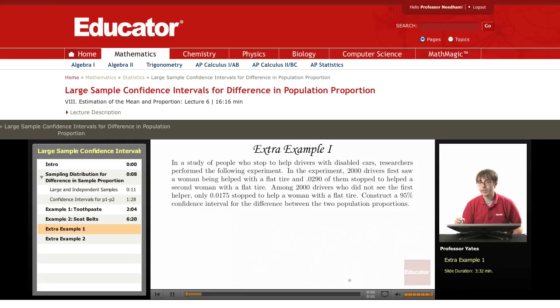Welcome back to Educator.com. We're going to look at a few more examples here on trying to come up with confidence intervals for the difference of two population proportions.